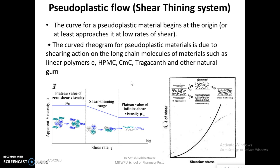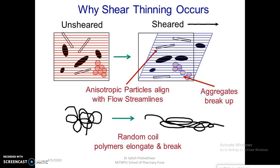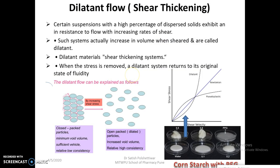Dilatant flow is the opposite of pseudoplastic flow — it is called a shear thickening system. When shear stress is applied, the system becomes more and more viscous. This behavior is observed in deflocculated suspensions where the dispersed particles are more than 50% of the total volume compared to the continuous phase. Examples include deflocculated suspension systems such as corn starch.